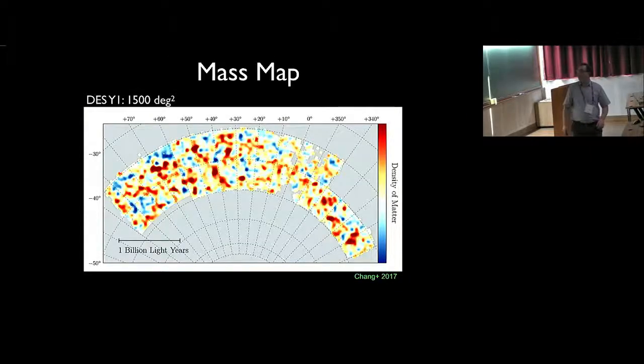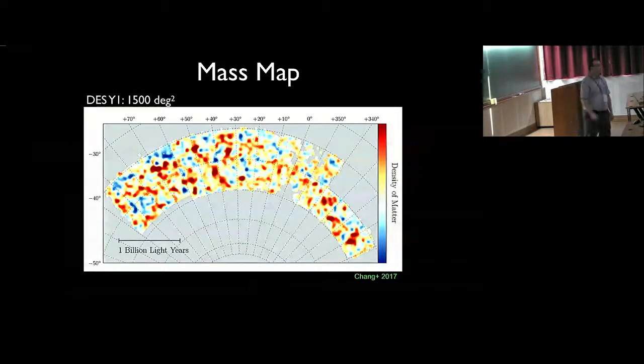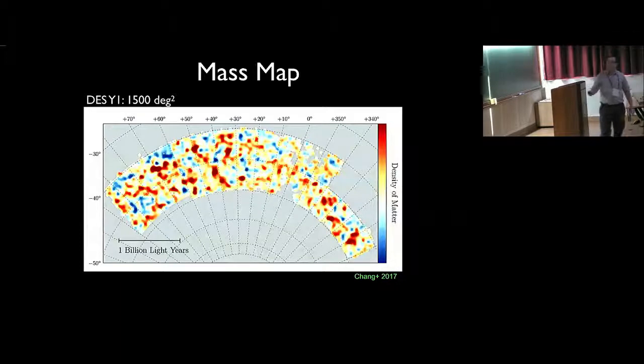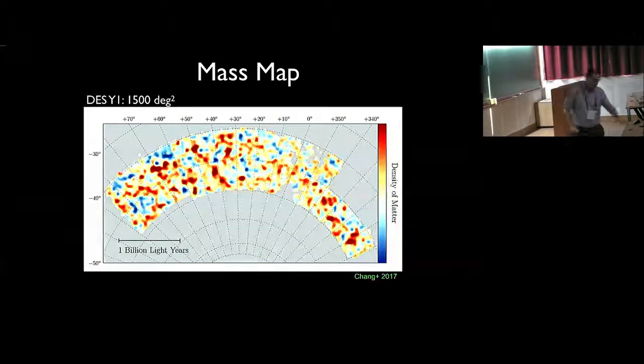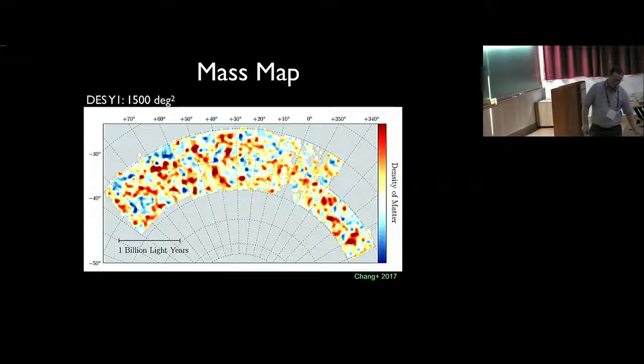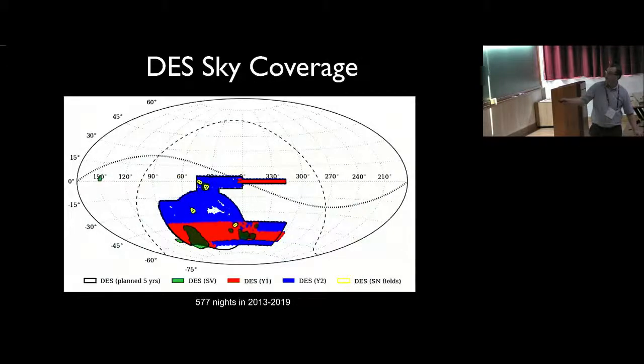This is the latest mass map that we derive for the first year data release with the dark energy survey. This covers 1,500 square degrees. It corresponds to this region here on the map, and again here, excluding this cannon region.